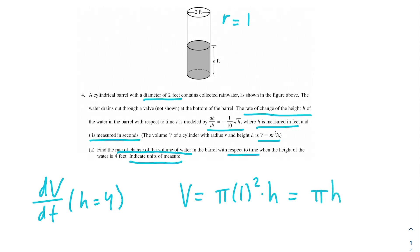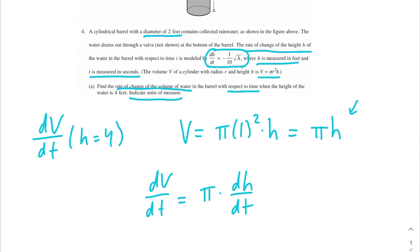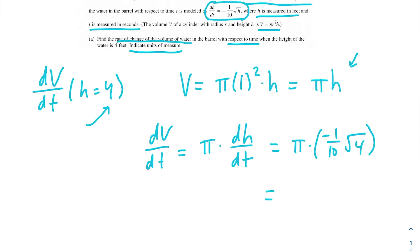Substituting r = 1, we get V = π times h. Taking the derivative with respect to t gives dv/dt = π times dh/dt. Plugging in our dh/dt equation, we get dv/dt = π times negative one over ten times the square root of h. With h = 4, we get negative π over ten times the square root of 4, which is 2, giving us negative π over 5.